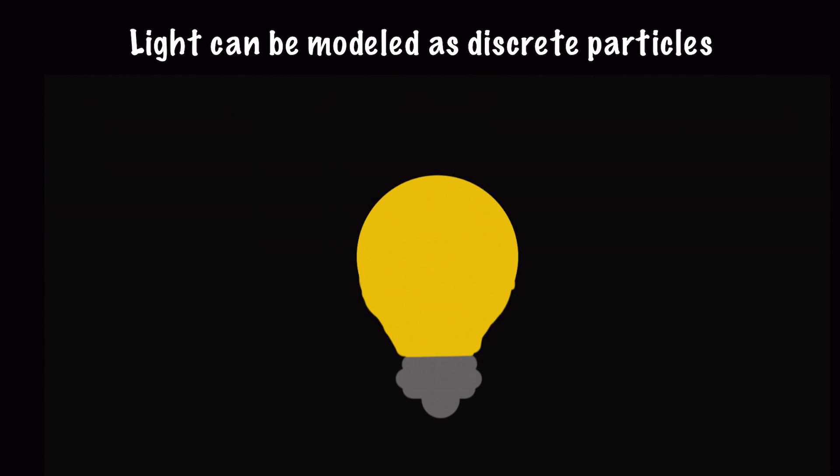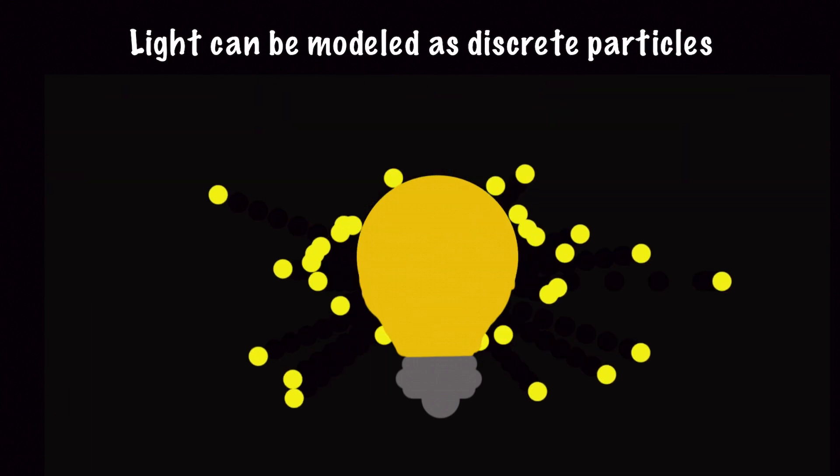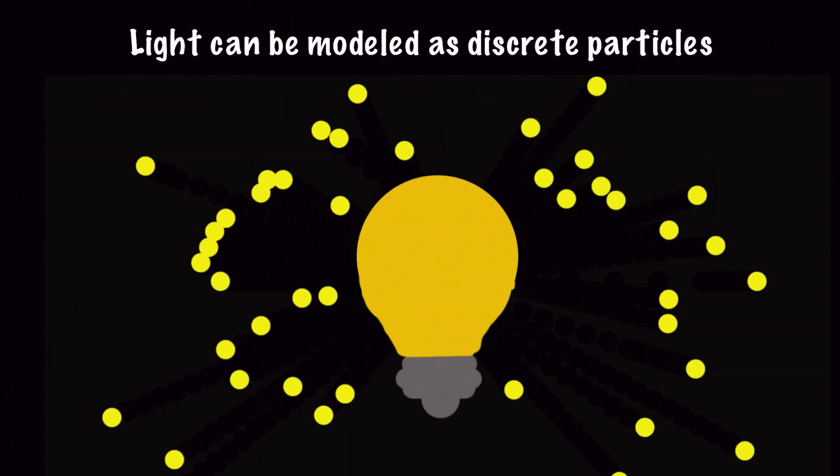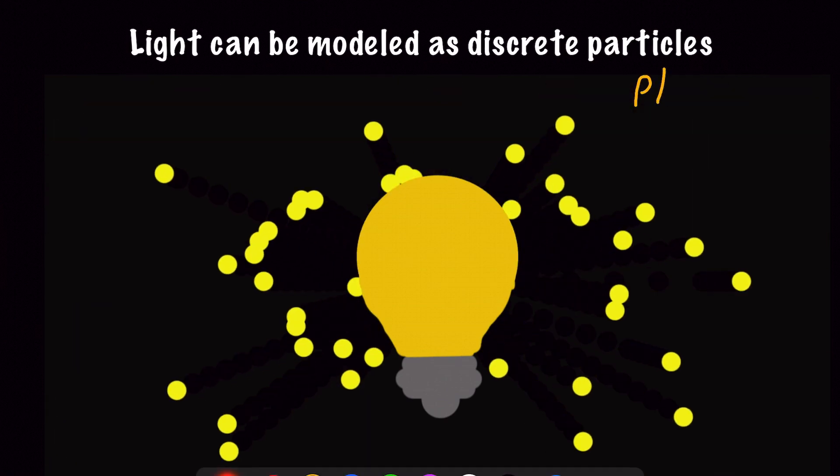In particular with light, it was classically thought only to exhibit behavior of a wave, but it can also be modeled as individual discrete particles called photons.